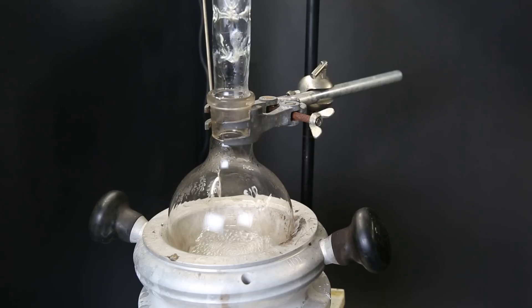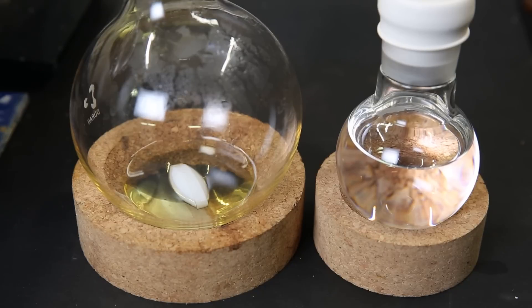After it had been running for a few hours, I collected enough in the receiving flask. So here we can see the remaining now yellow liquid on the left, and on the right, the fresh clear cyclopentadiene. For now, I will set it aside in the fridge and start preparing the next reactant for the ferrocene synthesis.